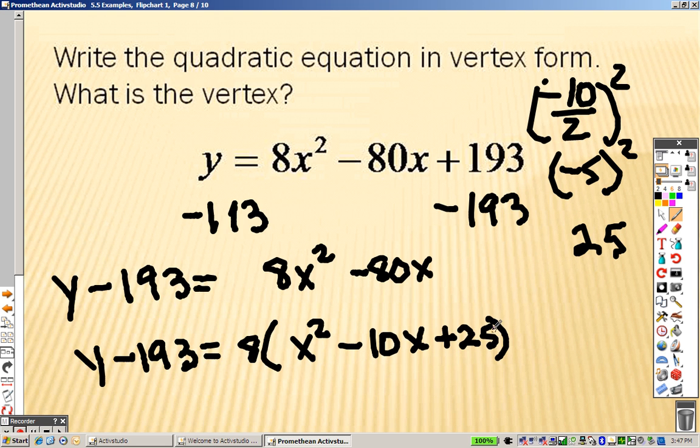So, if I put 25 on this side, right, on the other side, I actually have to put, excuse me, on the other side. So, yeah, I put a 25 on this side, but just because I put a 25, it's not actually what I put. I put an 8 times 25, which is actually 200. So, if I put 200 on this side, I need to put 200 on this side. So, really, what I have is 200 and negative 193. I actually have y plus 7 on that side.